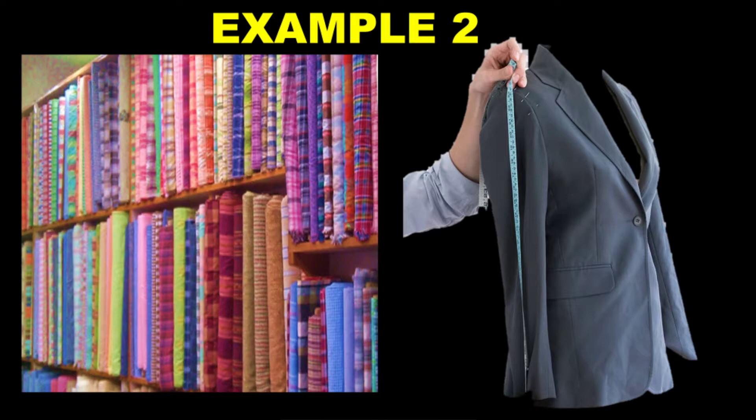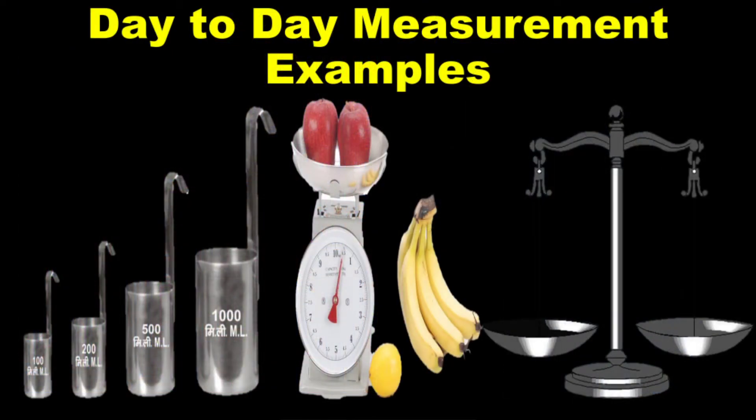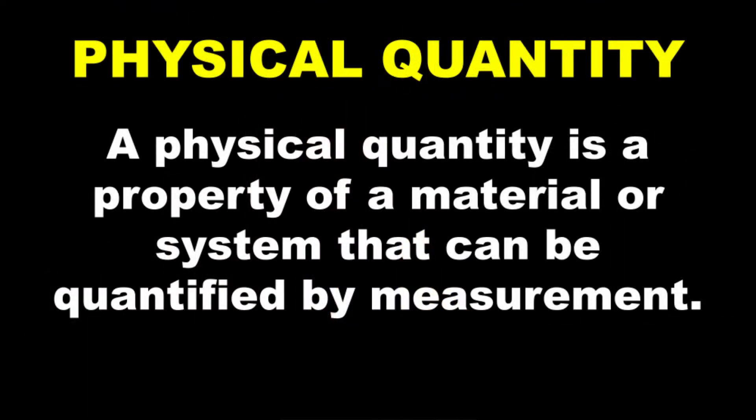So children, there are some quantities which we can measure. In everyday, day to day life, when the milkman comes, when you buy vegetables or fruits, it is all measured. So the substances which can be measurable, which can be measured, they are all termed as physical quantities. Jis bhi cheez ko aap naap sakta hai, woh sab physical quantities mein aata hai.